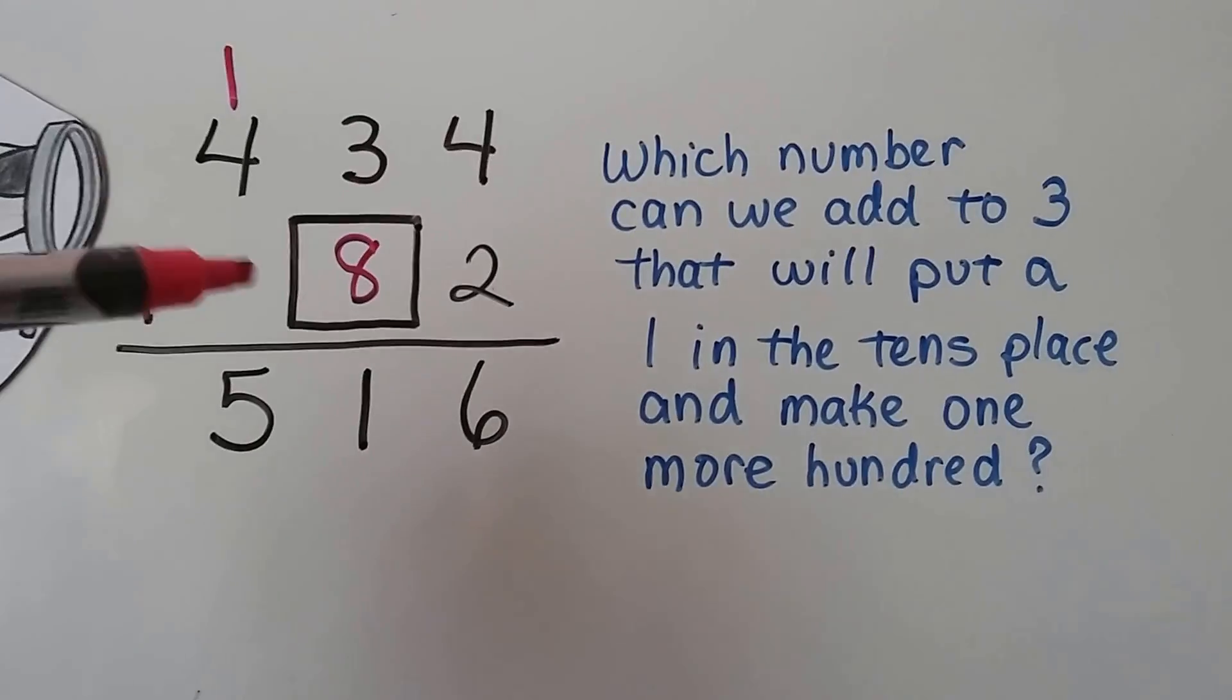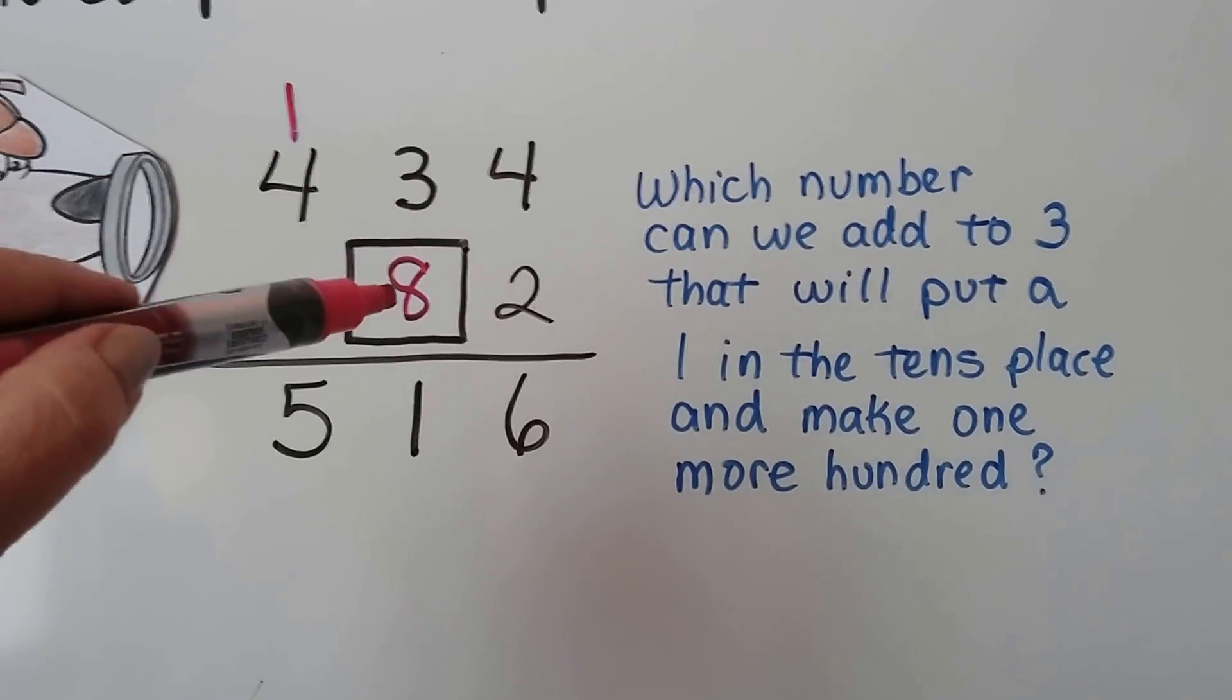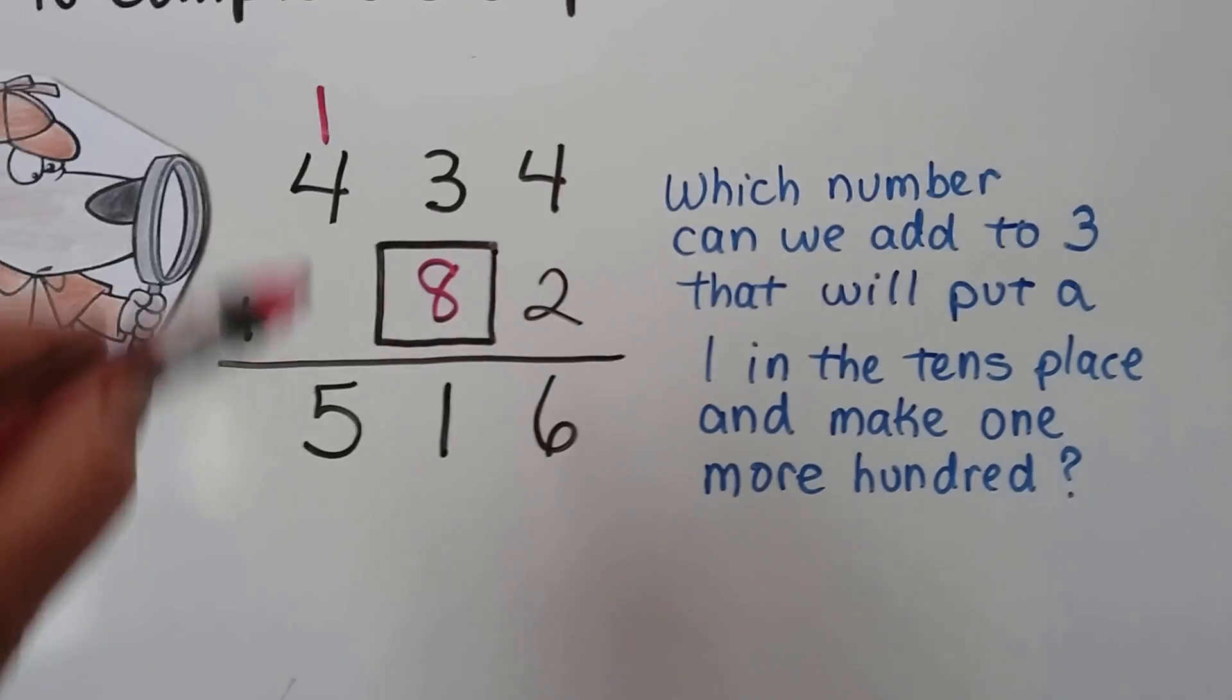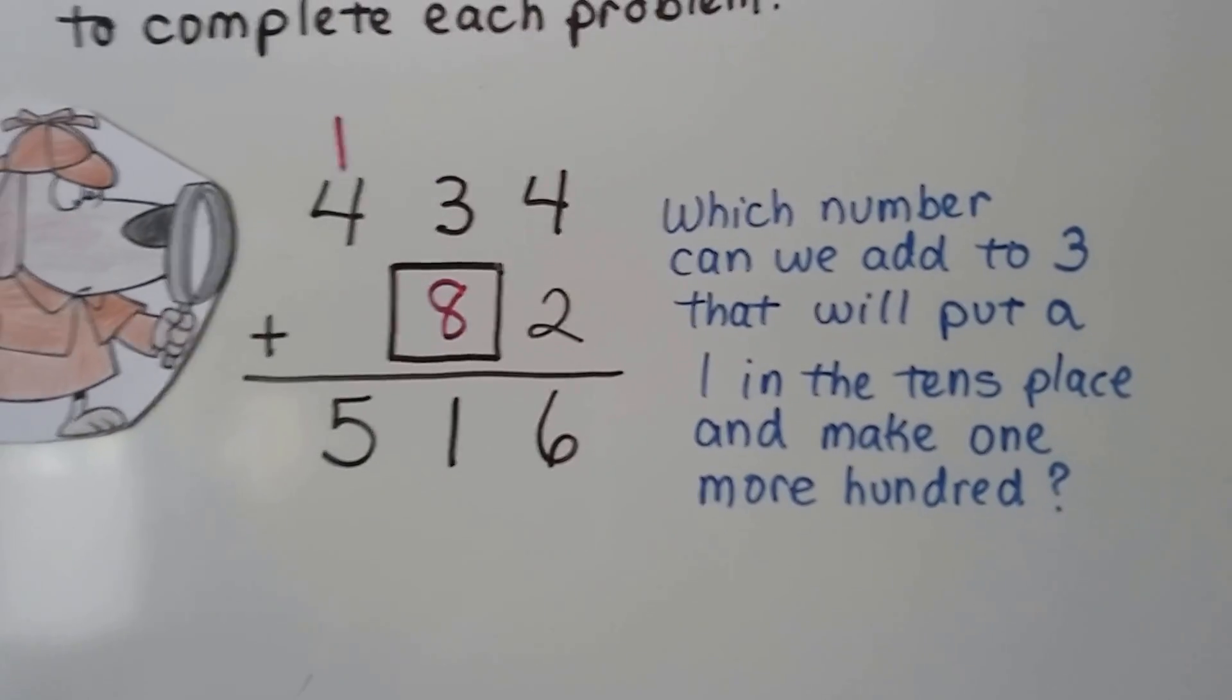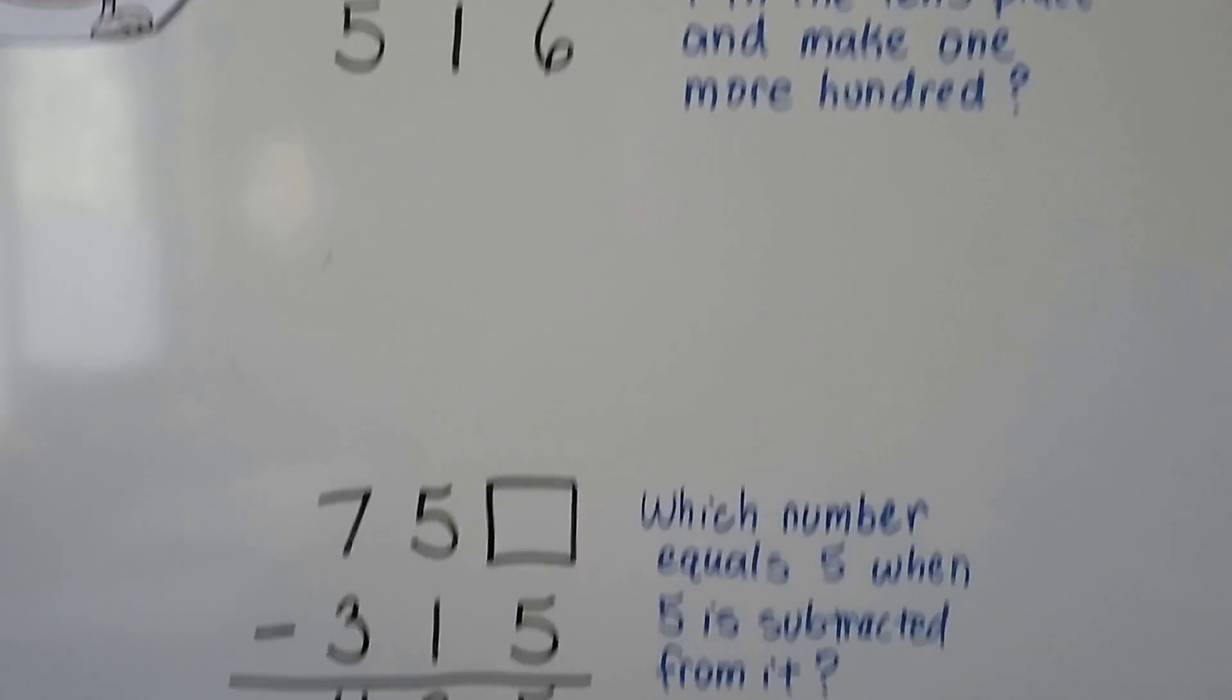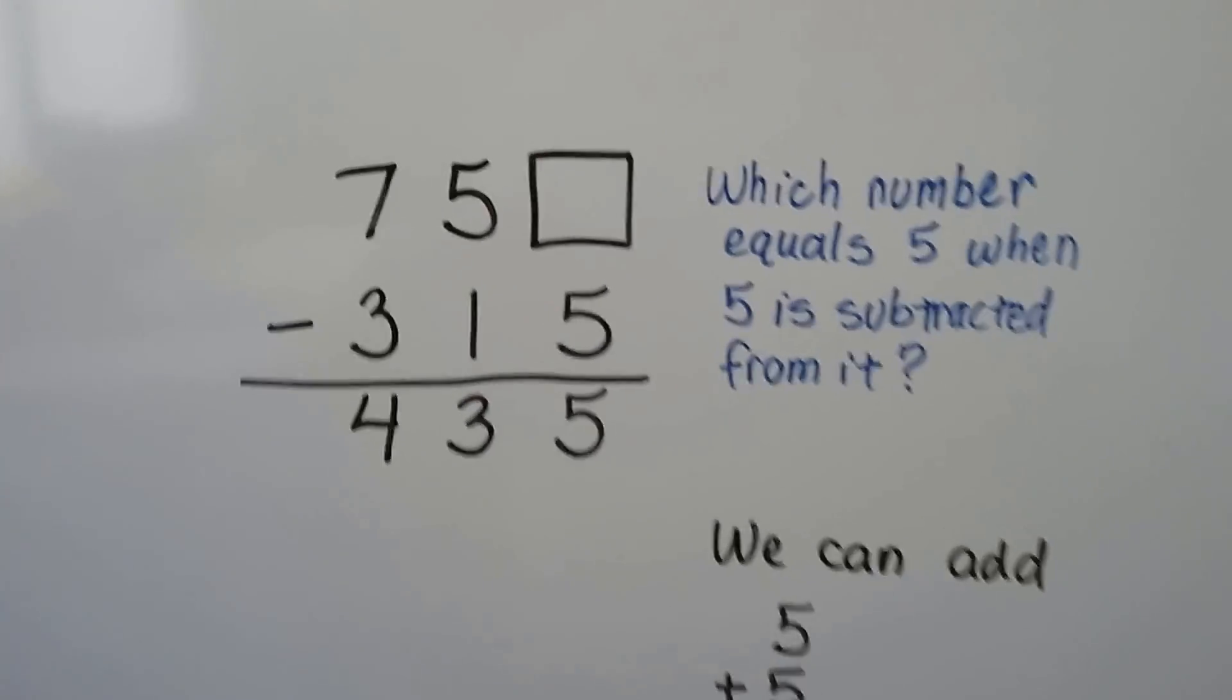And now when we look at this, 4 plus 2 is 6, 8 plus 3 is 8, 9, 10, 11. We regroup the 1, put the 1 down. 4 and 1 is 5. It worked. So you have to do a little detective work and do a little thinking. Let's try one that's a little bit different.